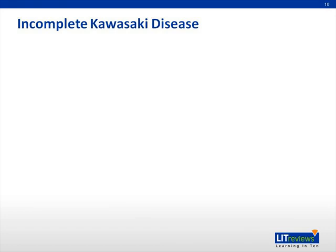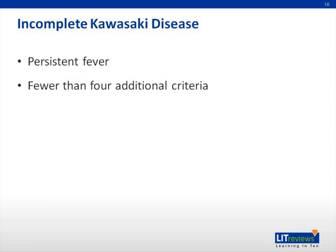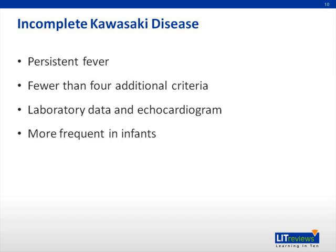Some children will present with features of Kawasaki disease but do not fulfill the diagnostic criteria. These children are classified as having an atypical or incomplete form of KD. They experience persistent fever but fulfill fewer than four of the five principal criteria. In these cases, laboratory data and echocardiogram results may be helpful to clarify the diagnosis. Younger patients are more likely to have atypical features and to develop coronary aneurysms.